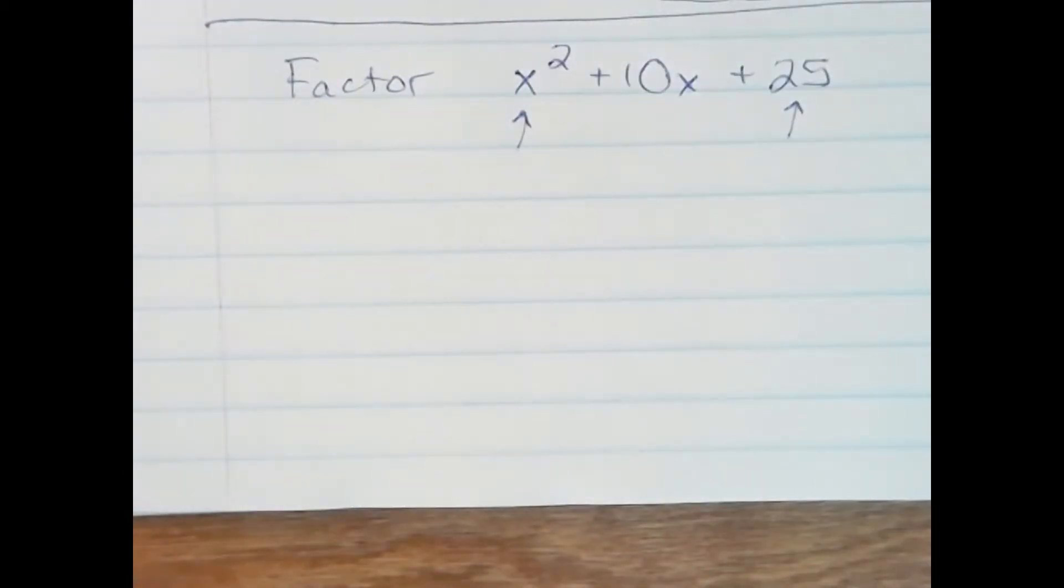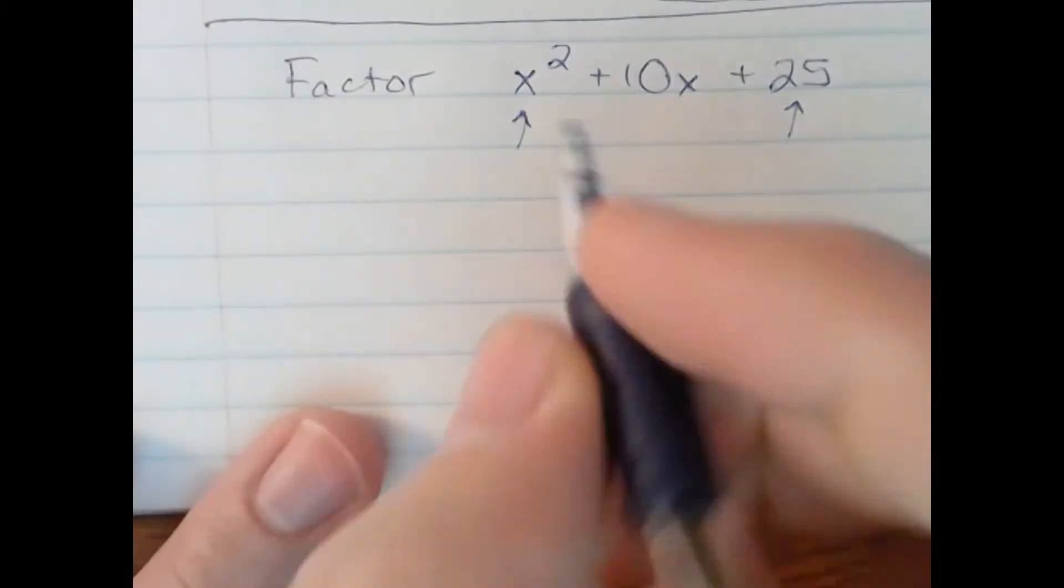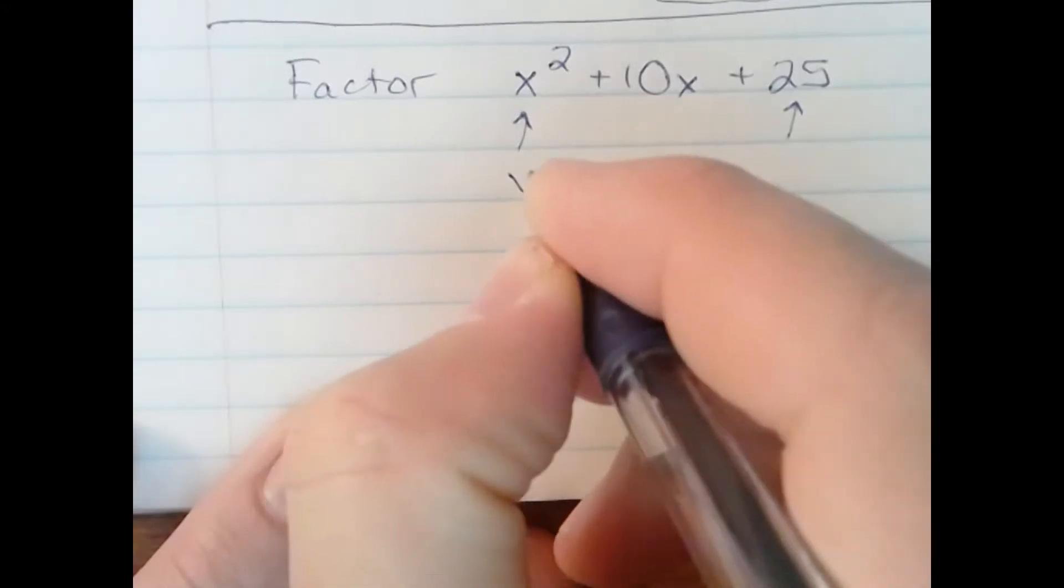The first term is x squared, a perfect square. The last term is 25, which is a perfect square. And if we find the square root of those, it's x and 5.